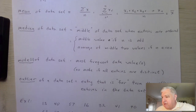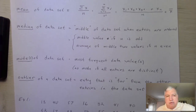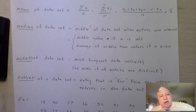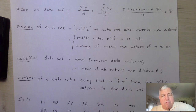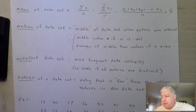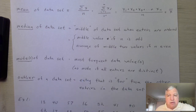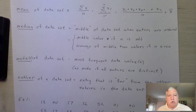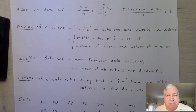The third measure of central tendency is the mode, which is just the most frequent data value in a data set. There could be more than one, so we can talk about the modes of a data set. If none of the entries are repeated — if they're all distinct — then we say the set has no mode. If we have two modes, we say the set is bimodal, and so on.